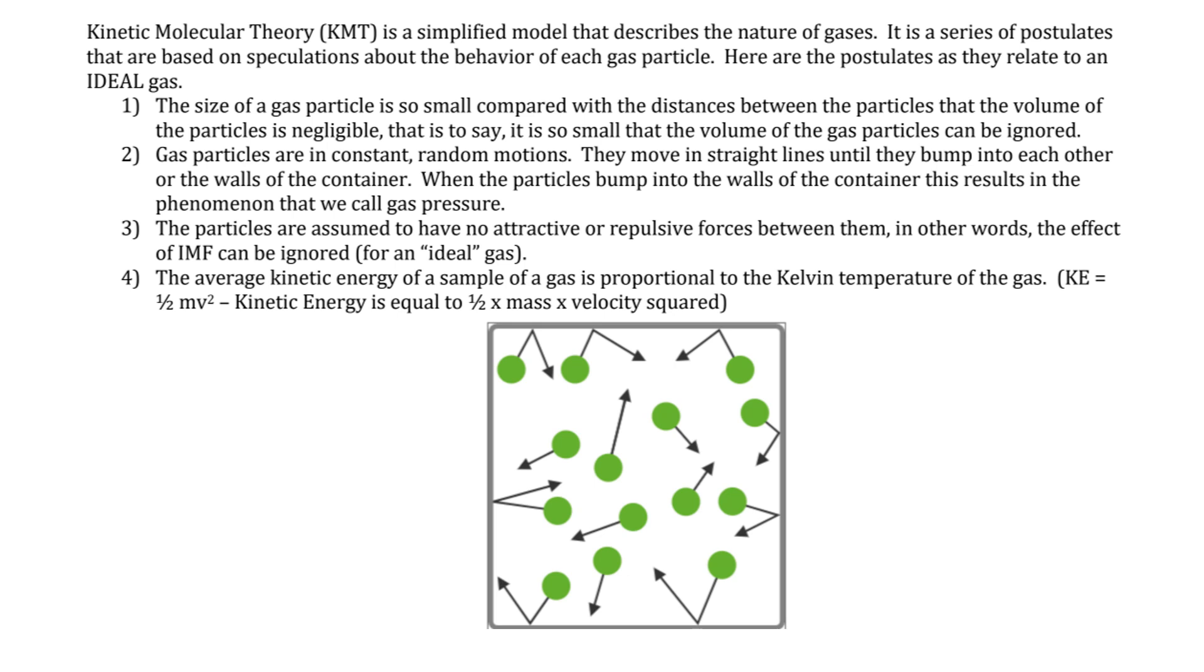Gas particles are in constant random motion. They move in straight lines until they bump into each other or the walls of the container. When the particles bump into the walls of the container, this results in the phenomenon we call gas pressure.